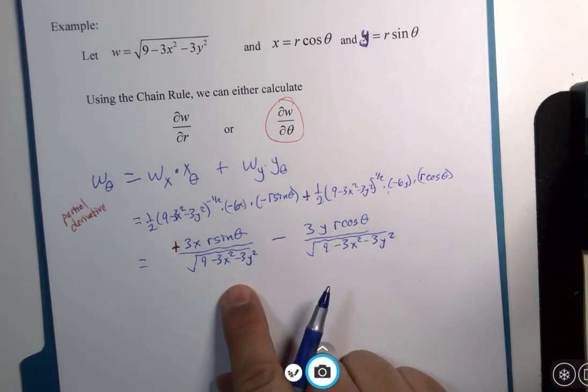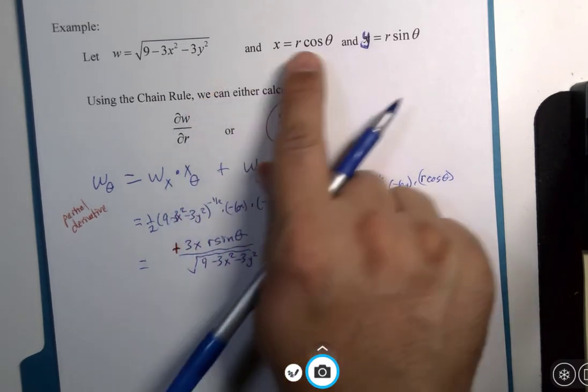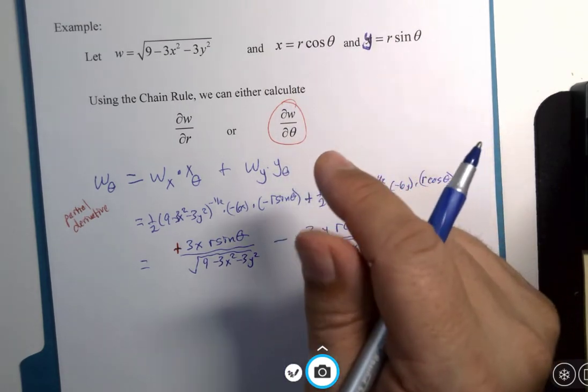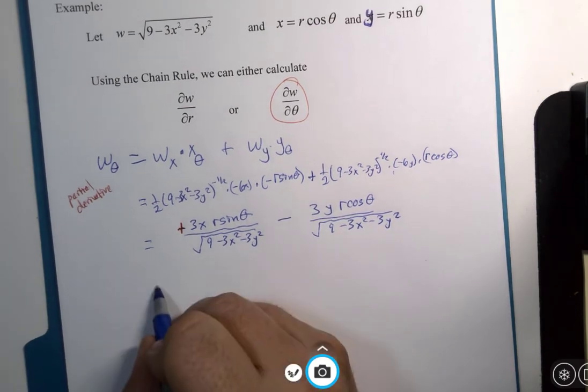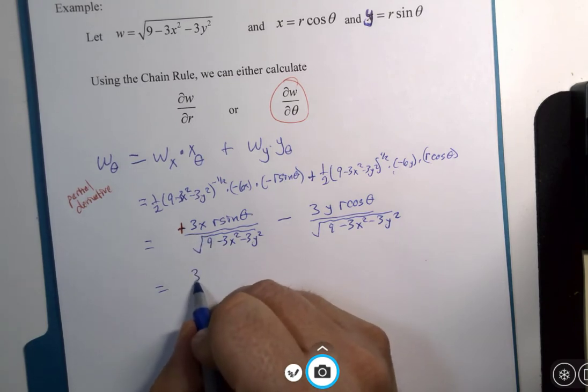All right. Now this is sort of a hybrid of two versions that are not, neither one's good. X and y have to be converted. So wherever you see x, wherever you see y, I need to do those replacements. So x is r cosine theta, I'll be three r squared sine theta cosine theta in the numerator.